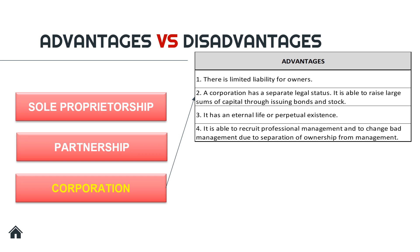Now, the advantages and disadvantages of a corporation. First advantage: there is limited liability for owners. In a corporation, the owners are the stockholders. As discussed earlier, stockholders are not liable for any debts incurred by the corporation — the corporation itself is liable. Second advantage: a corporation has a separate legal status and is able to raise large sums of capital through issuing bonds and stocks. To raise funds, corporations sell shares. The corporation itself may open its shares, or existing shareholders may sell their shares to others, and that is how they raise capital.